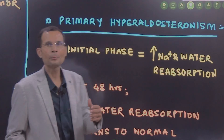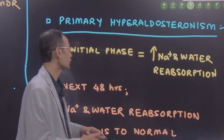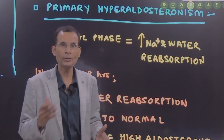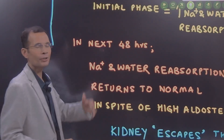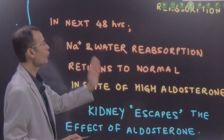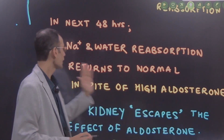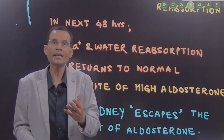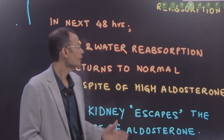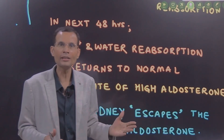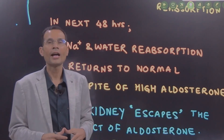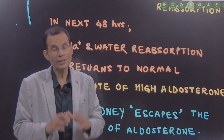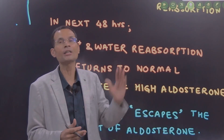Now, see what happens with primary hyperaldosteronism where there is an increased level of aldosterone. In the initial phase, yes, the effect will happen — there is increased sodium and water reabsorption and there will be hypertension. But then, in the next 48 hours or so, sodium and water reabsorption returns to normal in spite of high aldosterone levels. Even in the presence of high aldosterone levels, the kidney will escape the effect of that aldosterone, and the sodium and water reabsorption which had increased will return to normal.